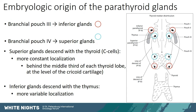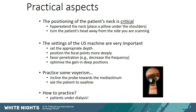In terms of practical aspects when scanning the patient's neck, it is very important to extend the neck as much as possible with a pillow under the shoulders, and to turn the patient's head away from the side being scanned to bring lesions more anteriorly closer to the surface. The machine settings are very important: set appropriate depth since we're looking for deep lesions, position focal points more deeply, favor penetration by decreasing the frequency, and optimize gain in deeper positions. One should also incline the probe towards the mediastinum, and ask the patient to swallow to see if glands or lesions in the thyrothymic ligament become visible during this maneuver.